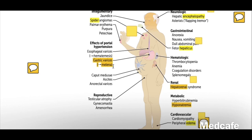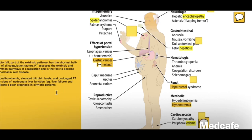Factor VII, part of the extrinsic pathway, has the shortest half-life of all coagulation factors. Prothrombin time, or PT, assesses the extrinsic and common pathways of coagulation and is the first to become abnormal in liver disease. Hypoalbuminemia, elevated bilirubin levels, and prolonged PT are signs of inadequate liver function and indicate a poor prognosis in cirrhotic patients — these are the triad of markers seen when the liver has totally failed.